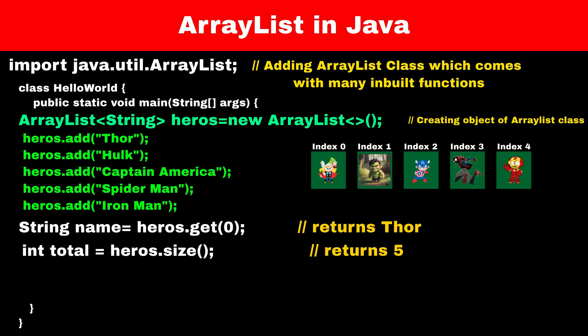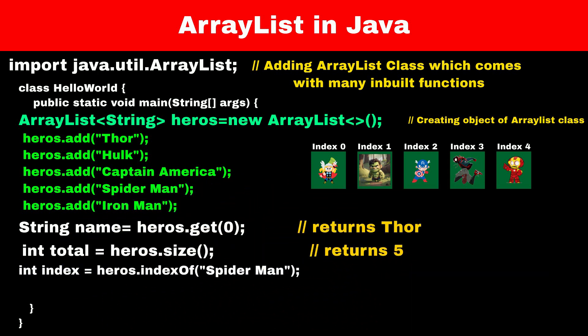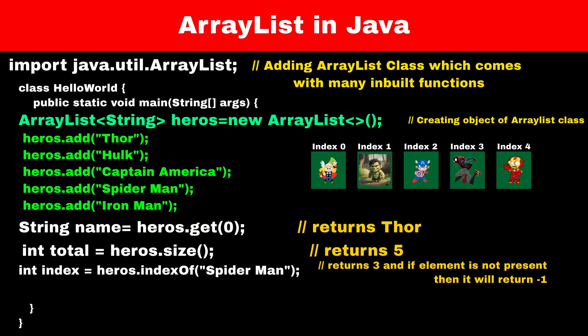Similarly, if we want to search for any element and get its index in an ArrayList, we can use the indexOf() function and pass the element to it. For example, if we want to find at what index Spiderman is saved, we will use heroes.indexOf("Spiderman"). This statement will return 3. And if the element is not present, the indexOf() function will return -1.